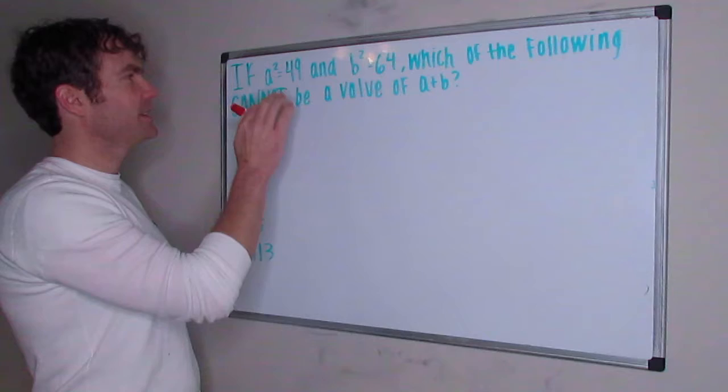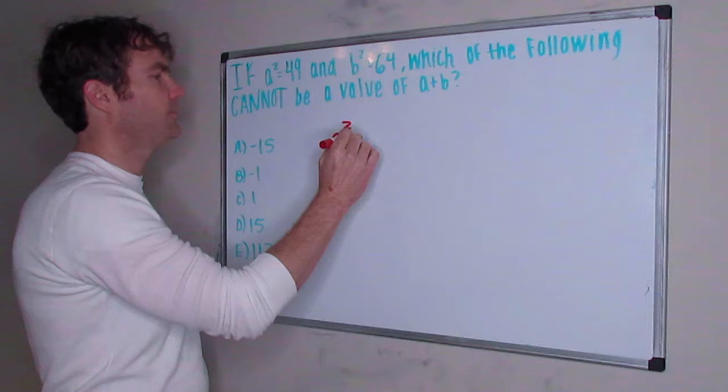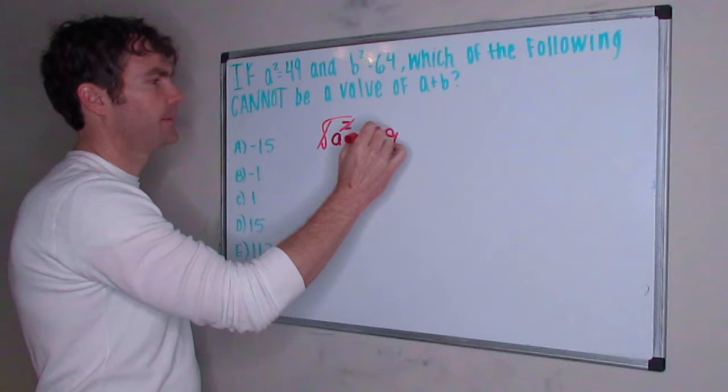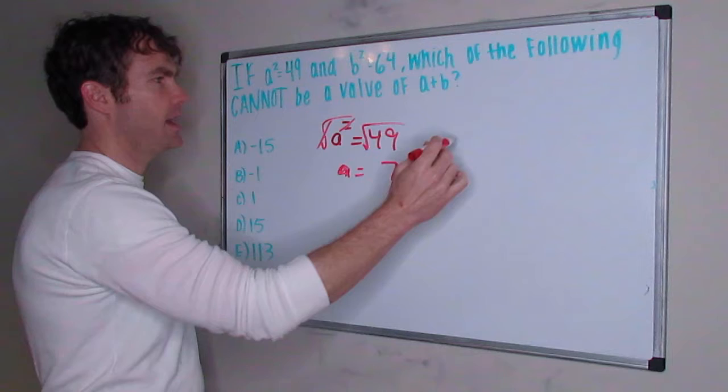It looks kind of easy at first. We've got to find a and b and add them together. Let's see what happens though. So if a squared is 49, then we square root both sides and a is 7, right?